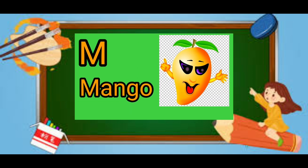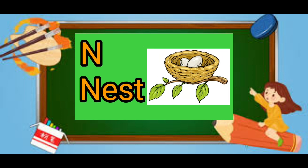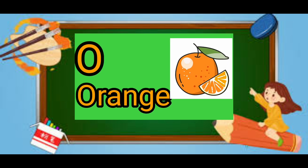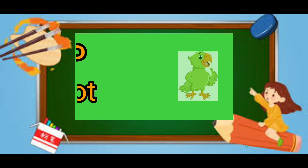M for mango, mango means arm. N for nest, nest means ghosla. O for orange, orange means santara.